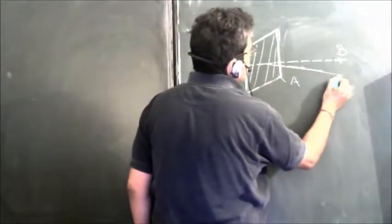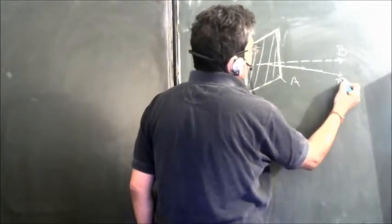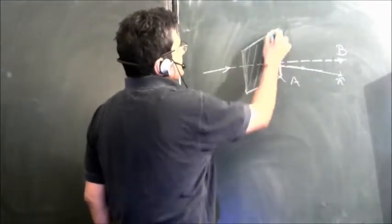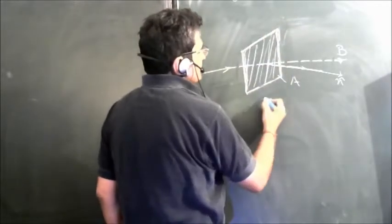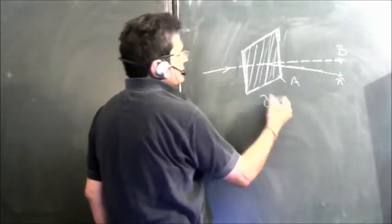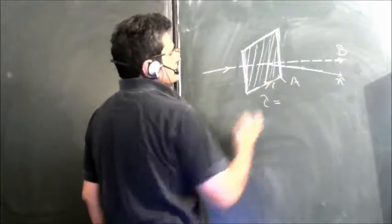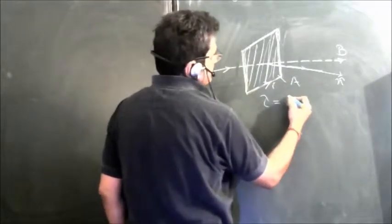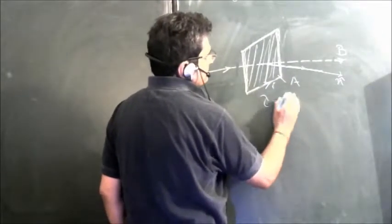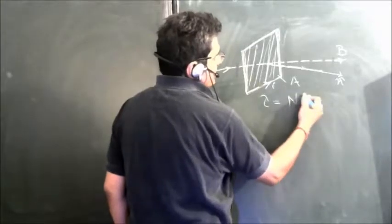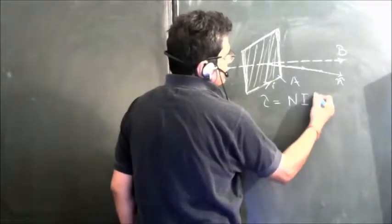We know that torque on a coil which carries current I is equal to N, the number of turns, times I, the current, times A, the cross-section area, cross B, which equals N I A B sine theta.